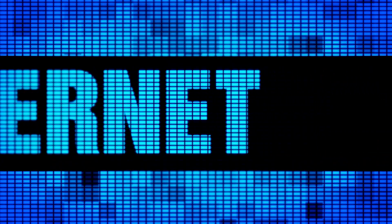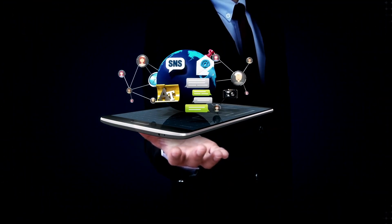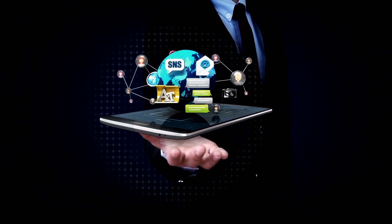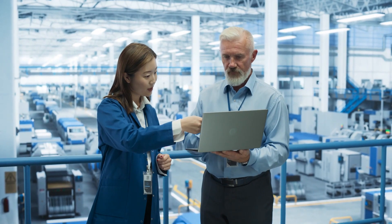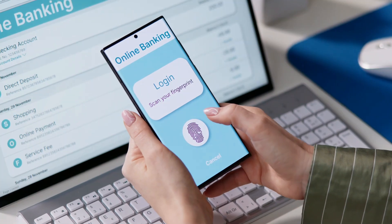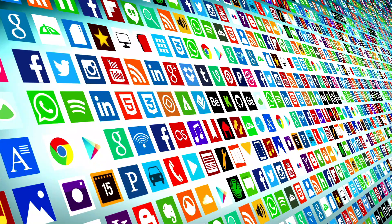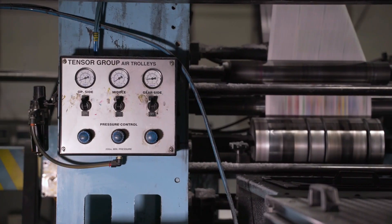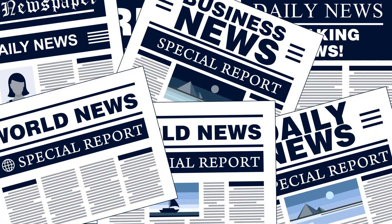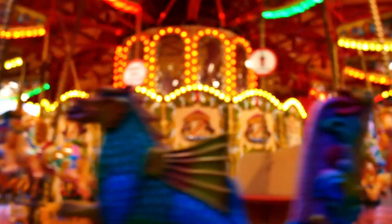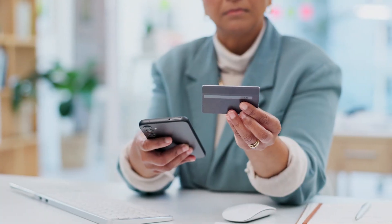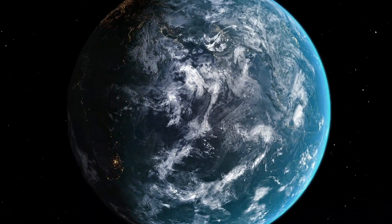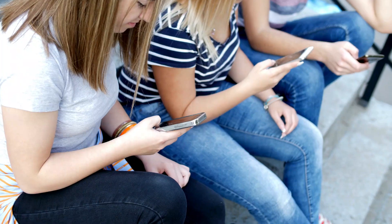The internet is undoubtedly the most important catalyst of the digital revolution. It has enabled the creation of new industries such as online commerce and social networks, and has transformed traditional sectors such as the press and entertainment. Online services ranging from streaming platforms to online banking have become ubiquitous.